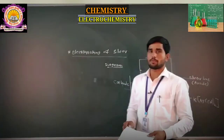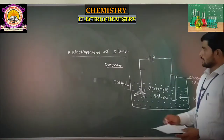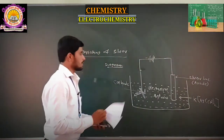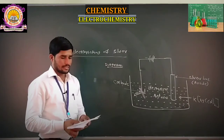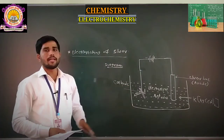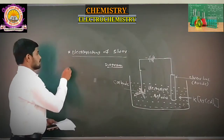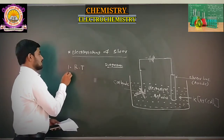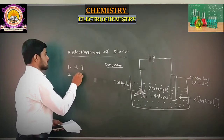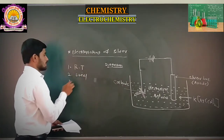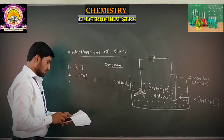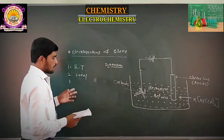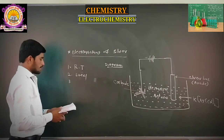In this electroplating process, we take a rectangular tank. This rectangular tank is made up of steel. RT stands for rectangular tank, and this tank is made up of steel metal.